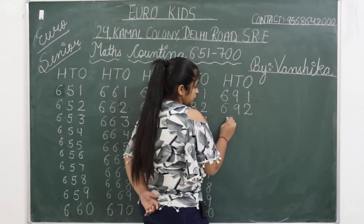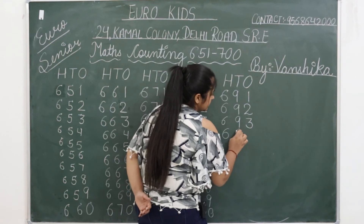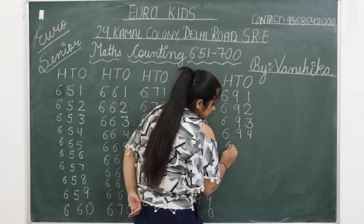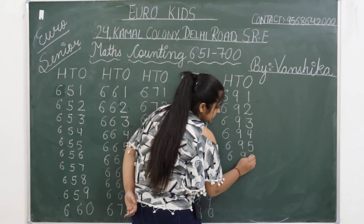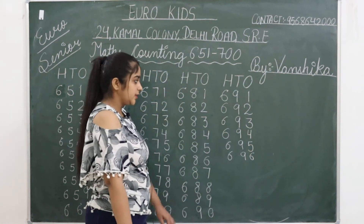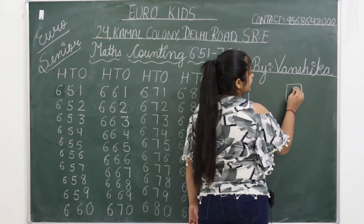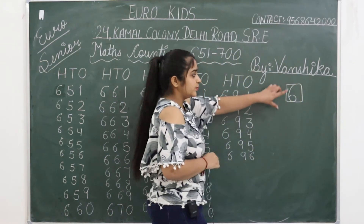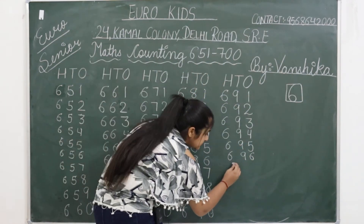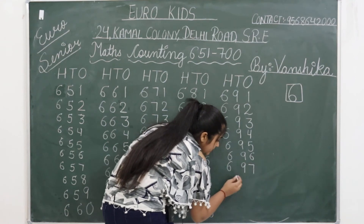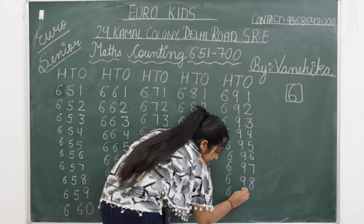692. 693. 694. 695. 696. Write in the full block, children. Touch the line from top and bottom nicely. 697. 698. 699.